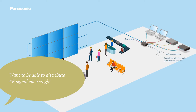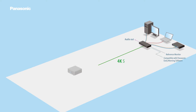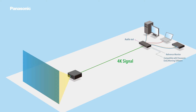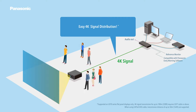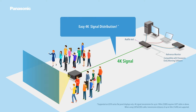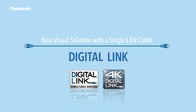Want to be able to distribute 4K signal via a single cable? Easy 4K signal distribution. The new visual solution with a single LAN cable — Digital Link.